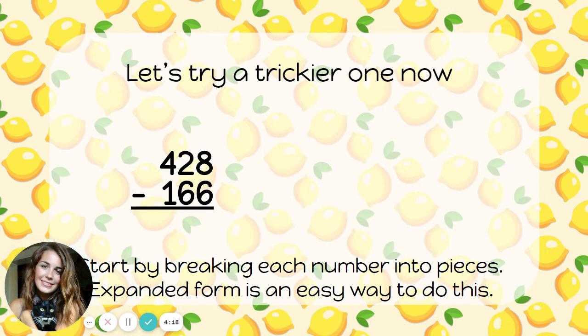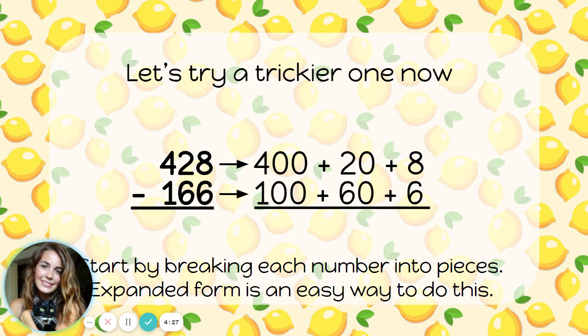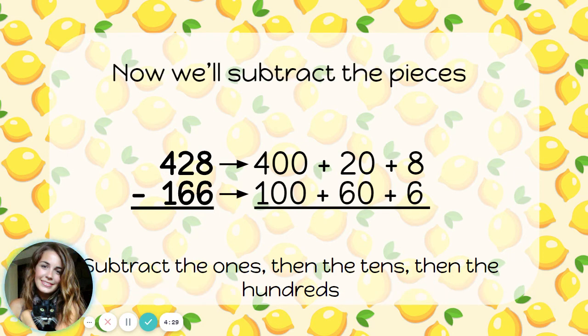Now let's try a trickier one. Once again, I'm going to write the numbers in expanded form. 400 plus 20 plus 8, and 100 plus 60 plus 6. Now I'm going to subtract the pieces. 8 minus 6 is 2.